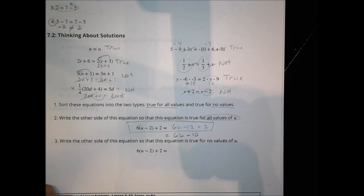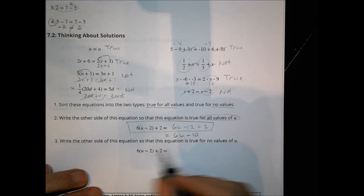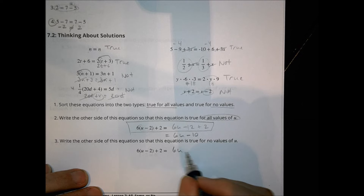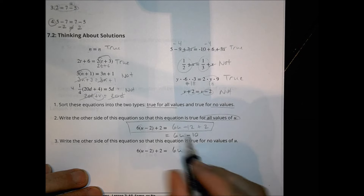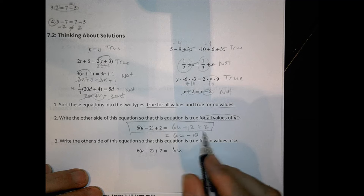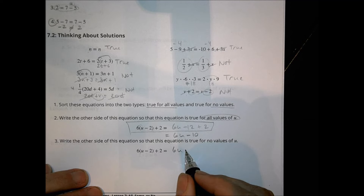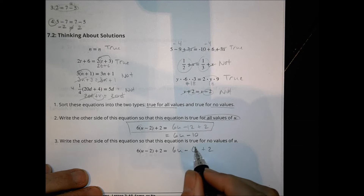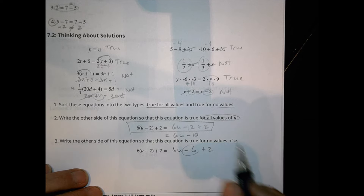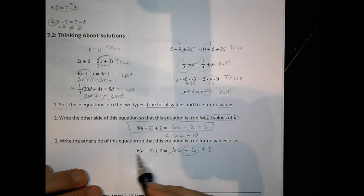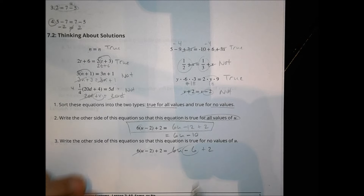If we want to make one that's not going to be true for all values of u — or for no values of u — then I need to set it up so that I have a 6u on one side, but over here I end up with a minus 10. I could do minus 6 plus 2 instead of the minus 12. That's going to result in something completely different — the 6u's cancel out, but the numbers aren't going to cancel out, so it's not going to work.